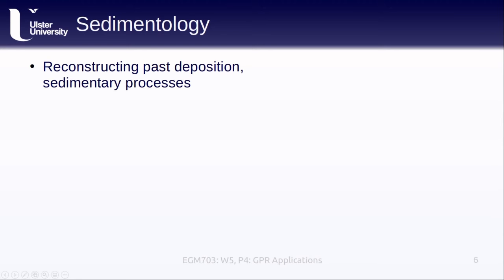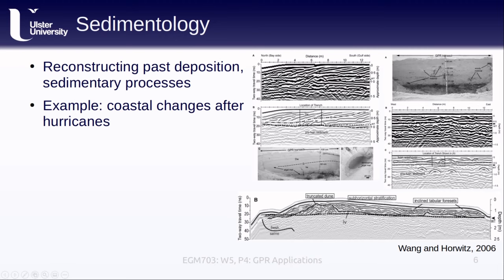One of the goals of sedimentology is to reconstruct past deposition and erosion patterns and to study sedimentary processes that often occur on long timescales. One example of events occurring on very short timescales are coastal changes after hurricanes, where large amounts of sediment can be deposited or eroded over hours to days. The examples shown here are from a study using GPR to map sand deposition on barrier islands in the aftermath of several hurricanes. In the upper right figure, we can see woody debris in the sand showing up as hyperbolic reflectors, as well as the bottom of the new sediment layer (the washover) and the location of the water table.